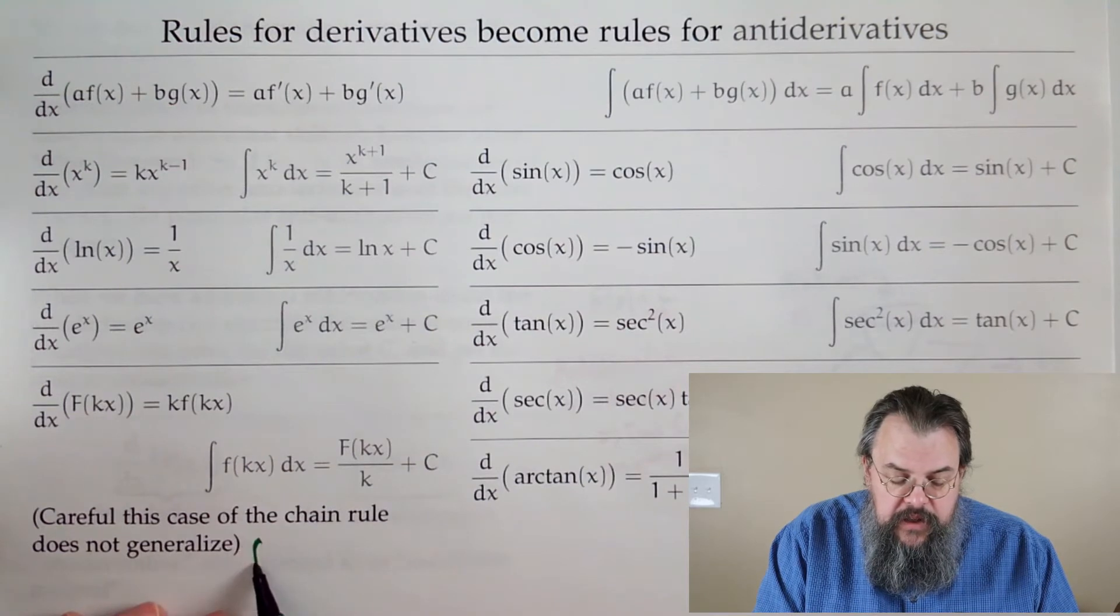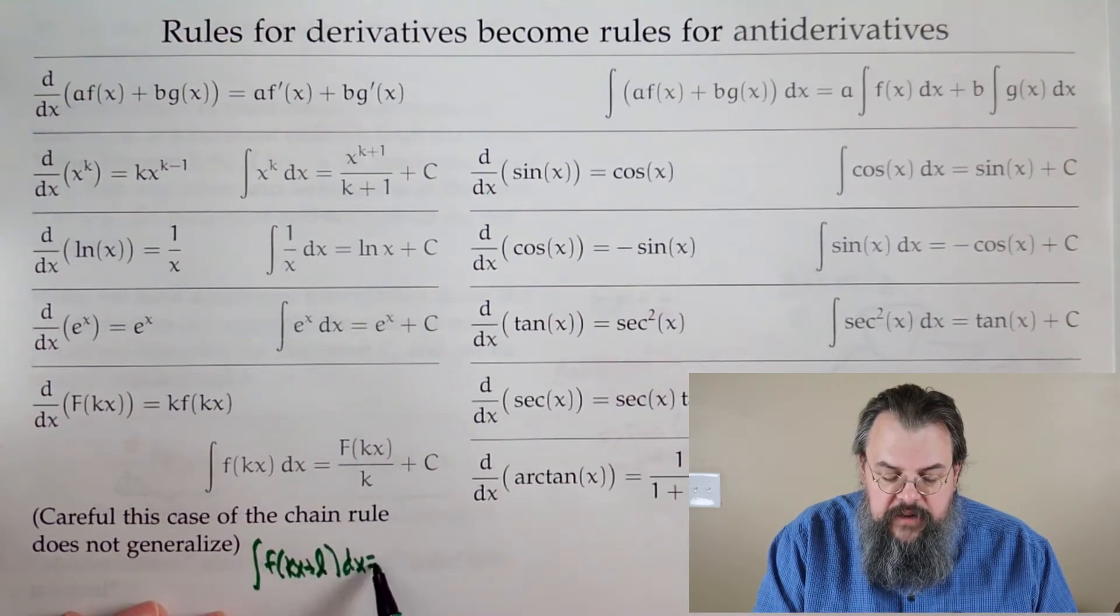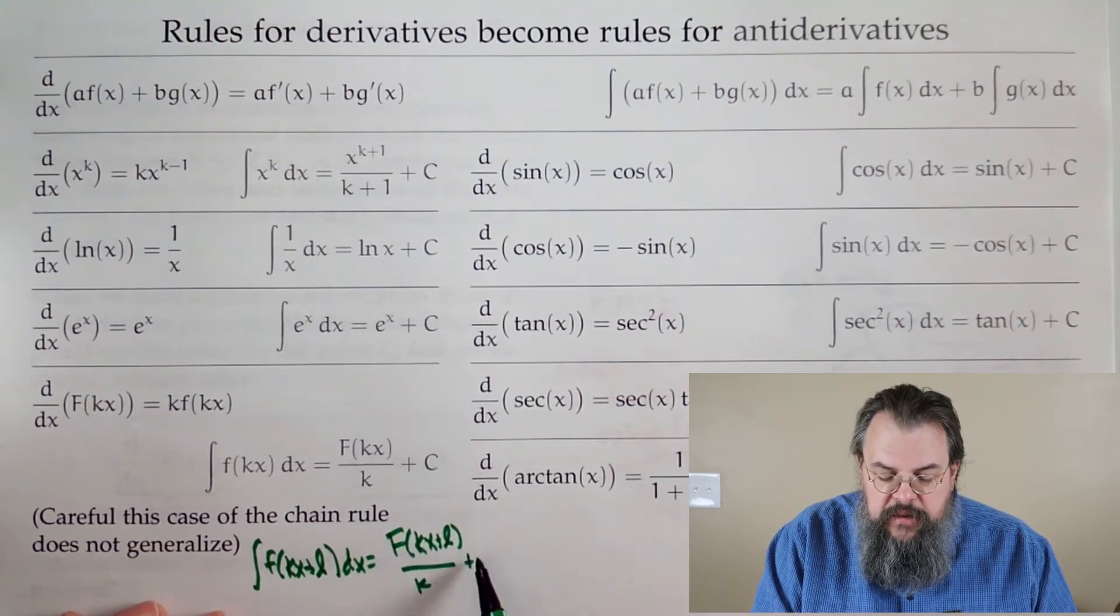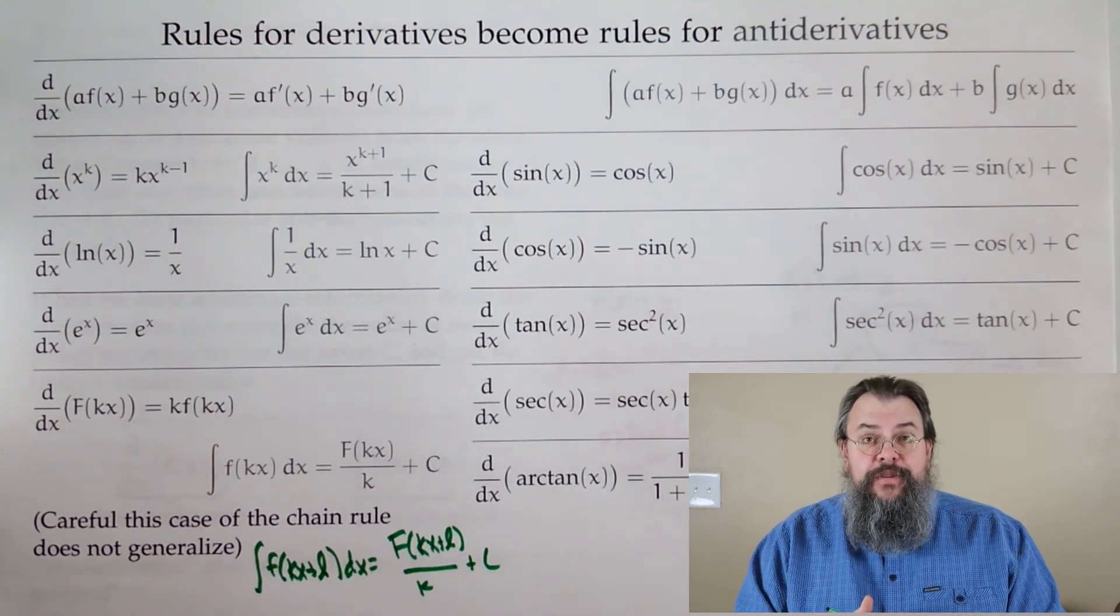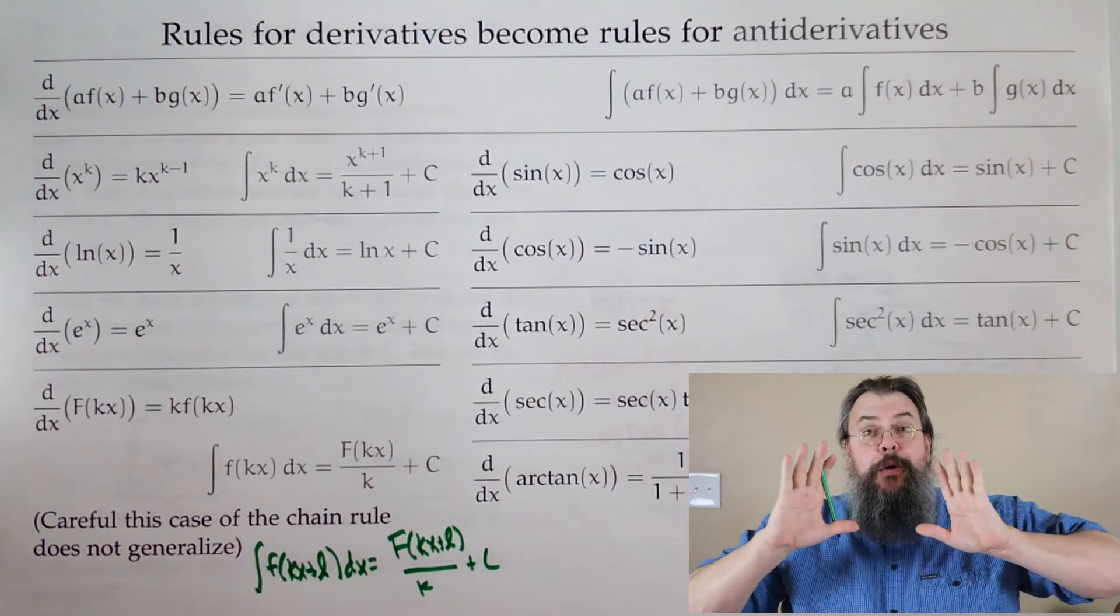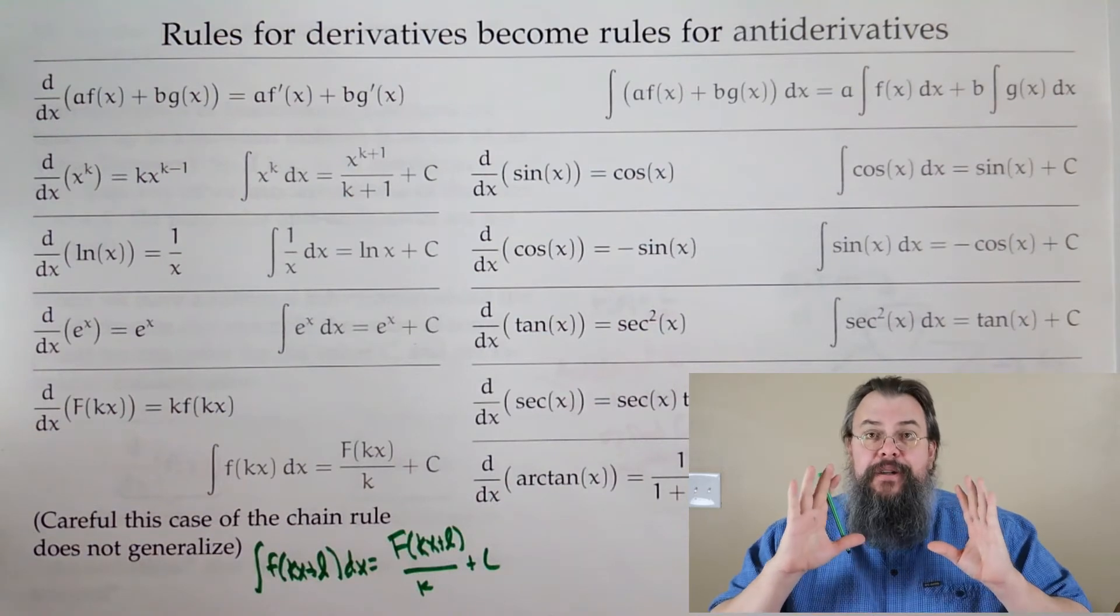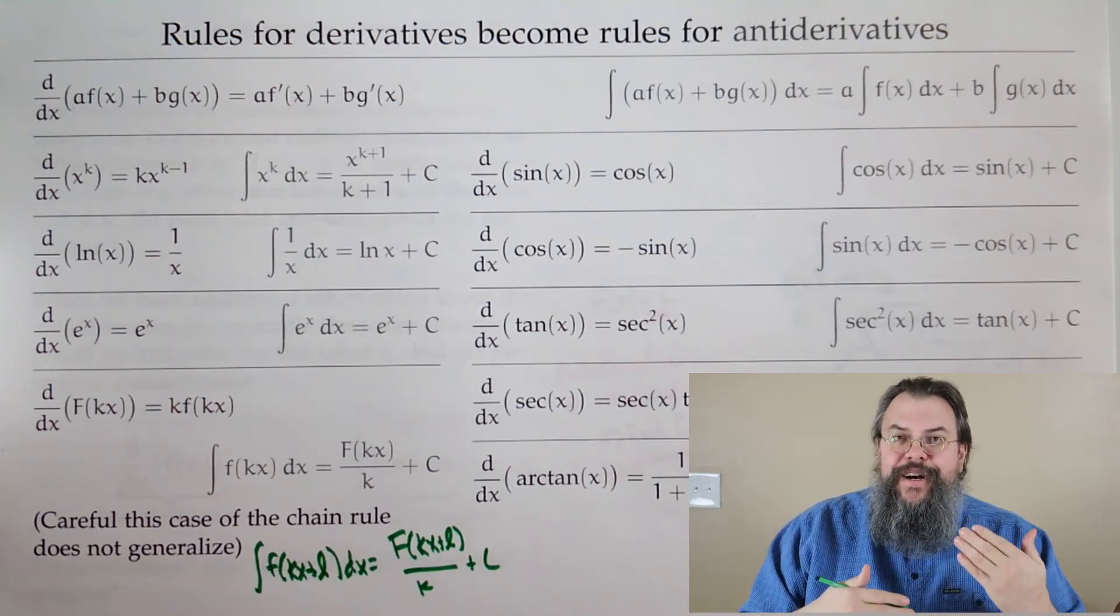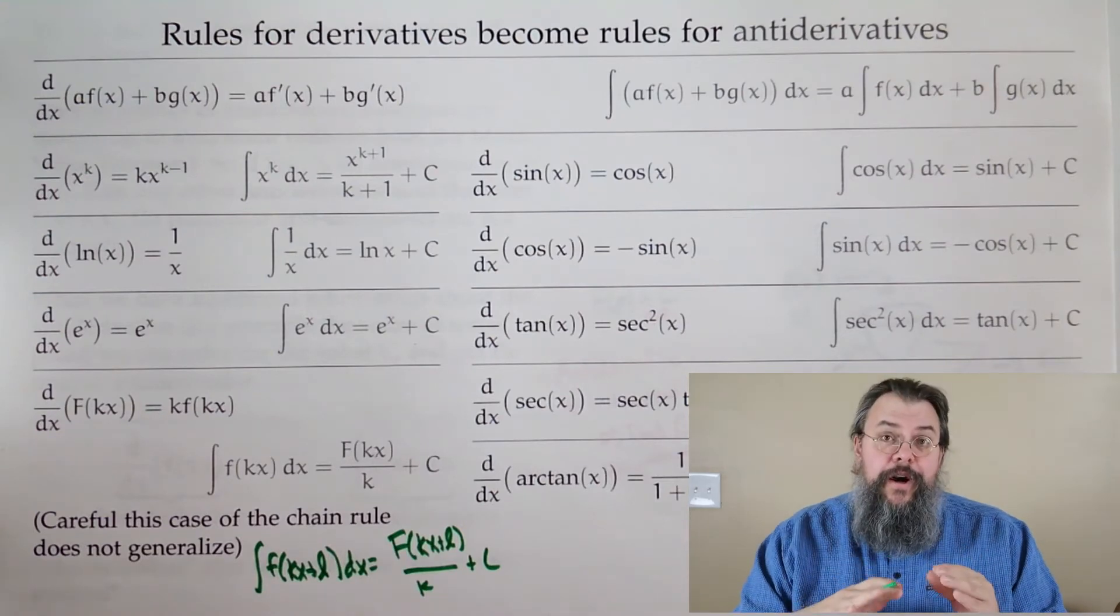So essentially, you need to divide by k to accommodate for the inside. Now, this is a really very special case of the chain rule. Be very, very careful about applying in the future. You can really say the integral f of k x plus some constant l is capital F of k x plus some constant l over k plus C. But this is about as far as we're comfortable going with the chain rule for right now. Because it's very easy to apply it wrong for antiderivatives.